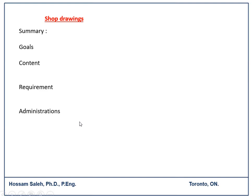As advice: if you are working on a construction project, do not start manufacturing your item or member unless you get input from the consultant on the shop drawing. At a minimum, get a 'Reviewed as Noted' response so you can start working without additional delay. After receiving that, forward the drawing to the subcontractor to start the manufacturing process, and keep the consultant's approval on file for your records.